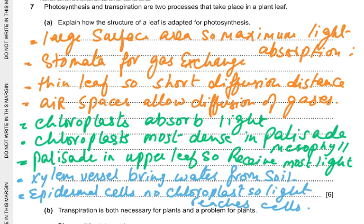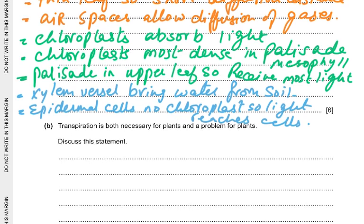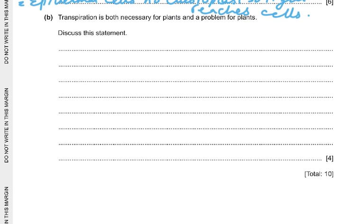To word it properly: large surface area — broad lamina — for maximum light absorption; stomata for gas exchange; thin leaf for short diffusion distance; air spaces allow diffusion of gases; chloroplasts absorb light and are most dense in the palisade mesophyll; palisade is in the upper part of the leaf so receives most light; xylem vessels bring water from the root; epidermal cells have no chloroplasts so light can pass through to reach the palisade cells. There were nine mark scheme points — give any six for full marks.